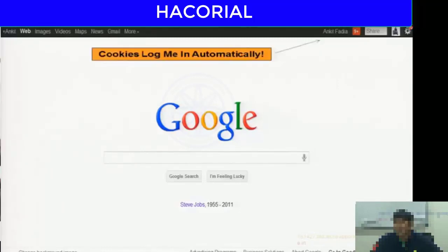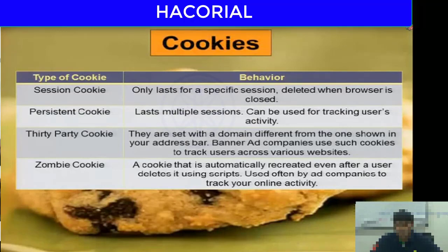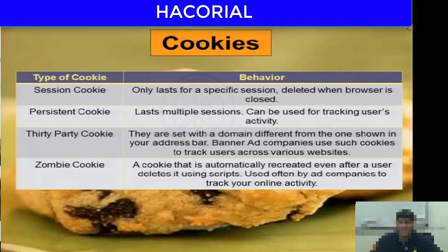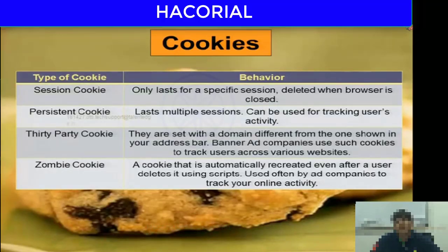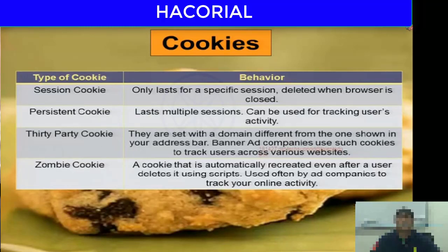There are different types of cookies. For this course, we'll focus on the first two: session cookies and persistent cookies. A session cookie is a cookie that only lasts for a particular internet session. If you shut down your browser, the session cookie is automatically deleted.